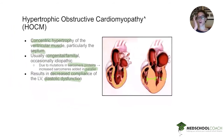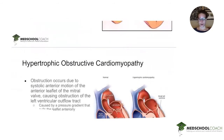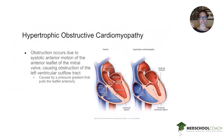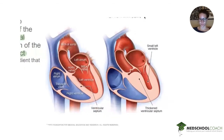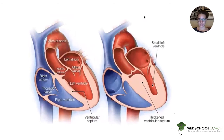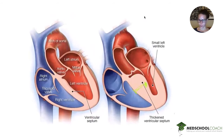How does HOCM kill you? It's in the name — obstructive. It's caused by systolic anterior motion (SAM) of the anterior leaflet of the mitral valve, which obstructs the outflow tract. In a HOCM heart, the thickened septum cramps where the mitral valve leaflets can go.